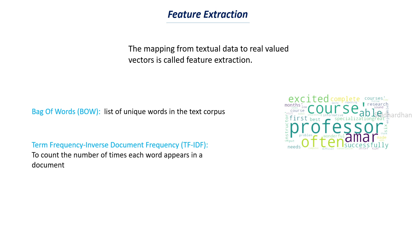Let's first understand what the TF-IDF vectorizer does. It counts the number of times each word appears in a document. We create a list of all the words in the paragraph or document and count the number of times each word repeats. You may have a doubt: how does counting the number of words help us convert text into numerical data?